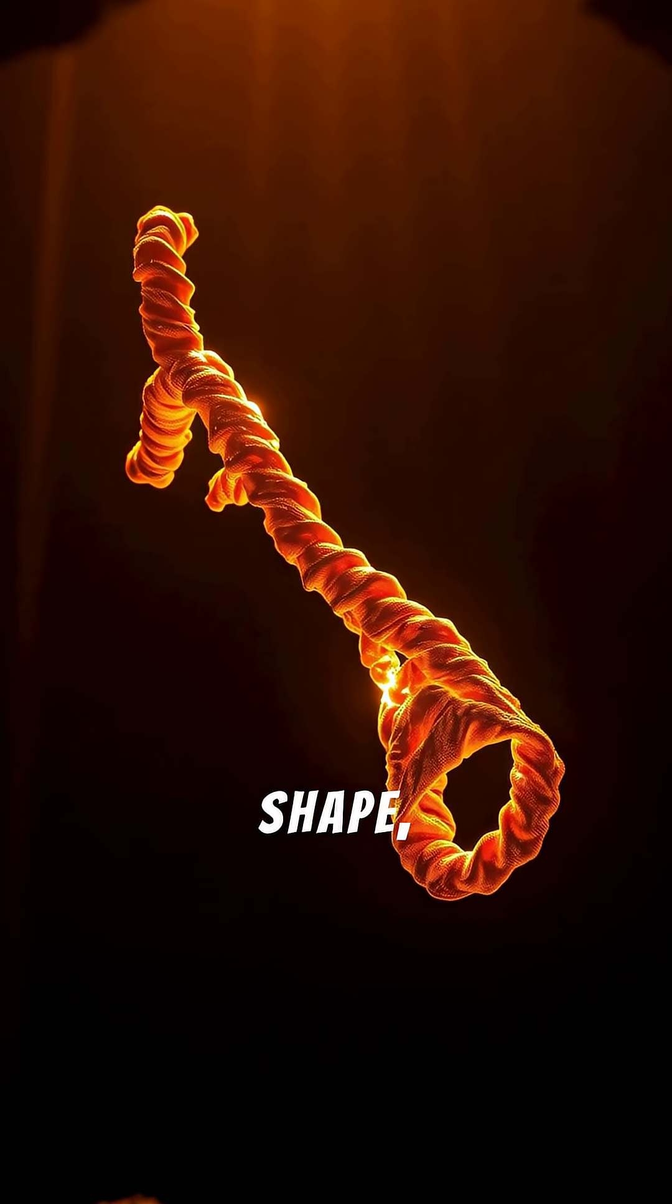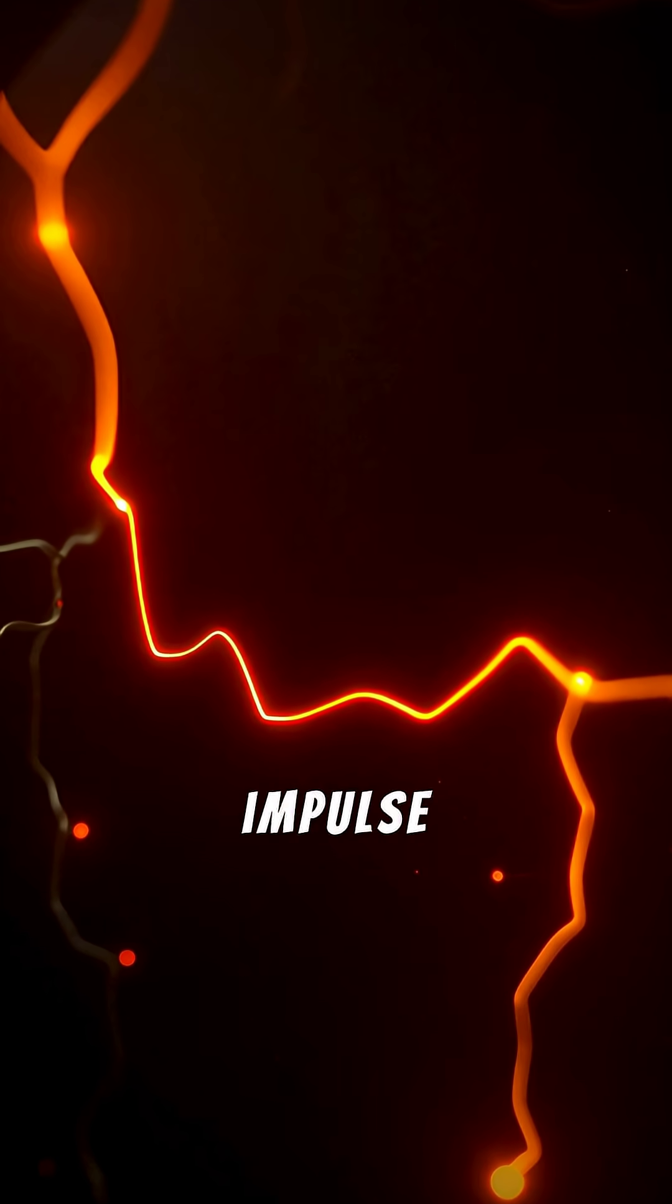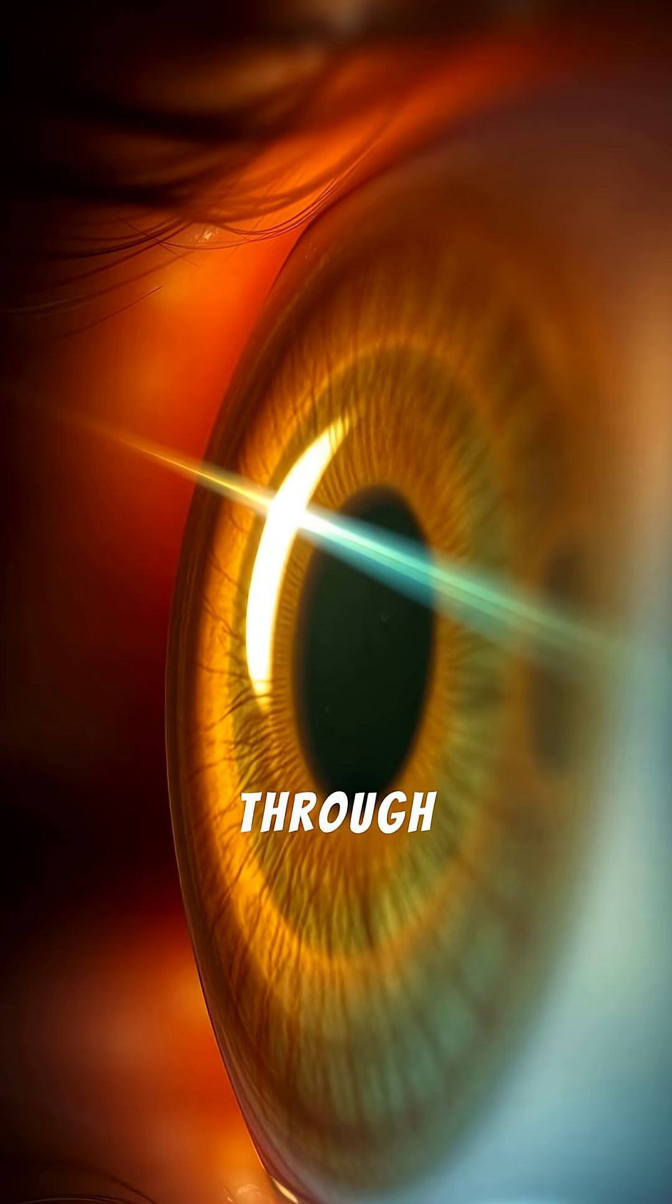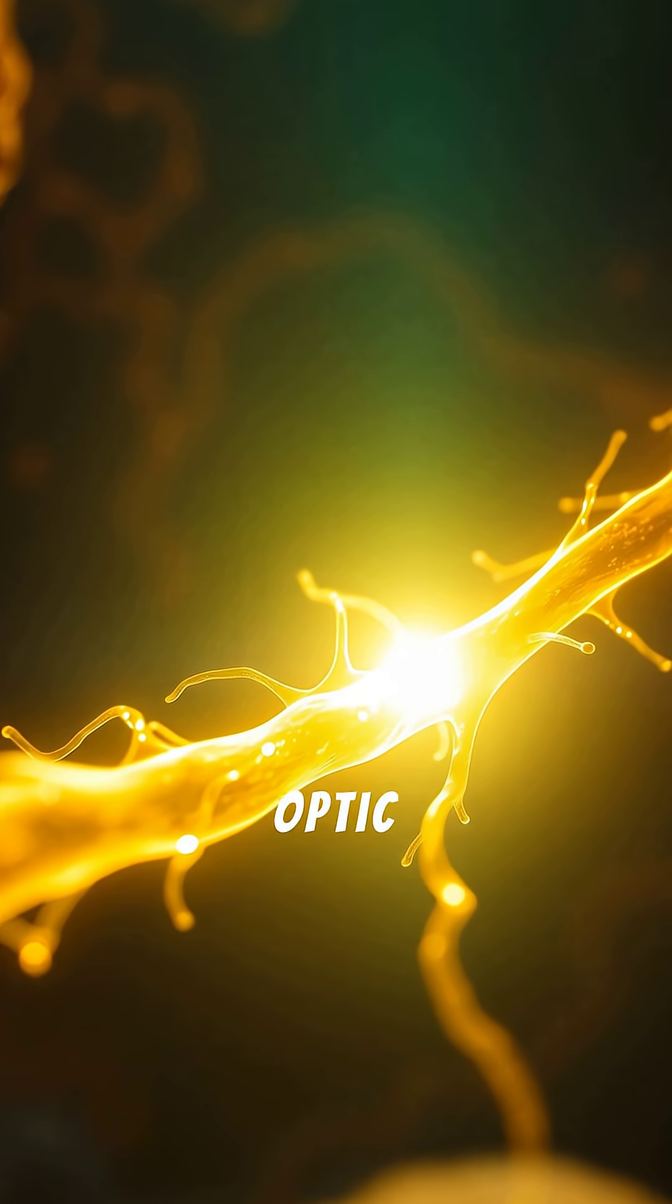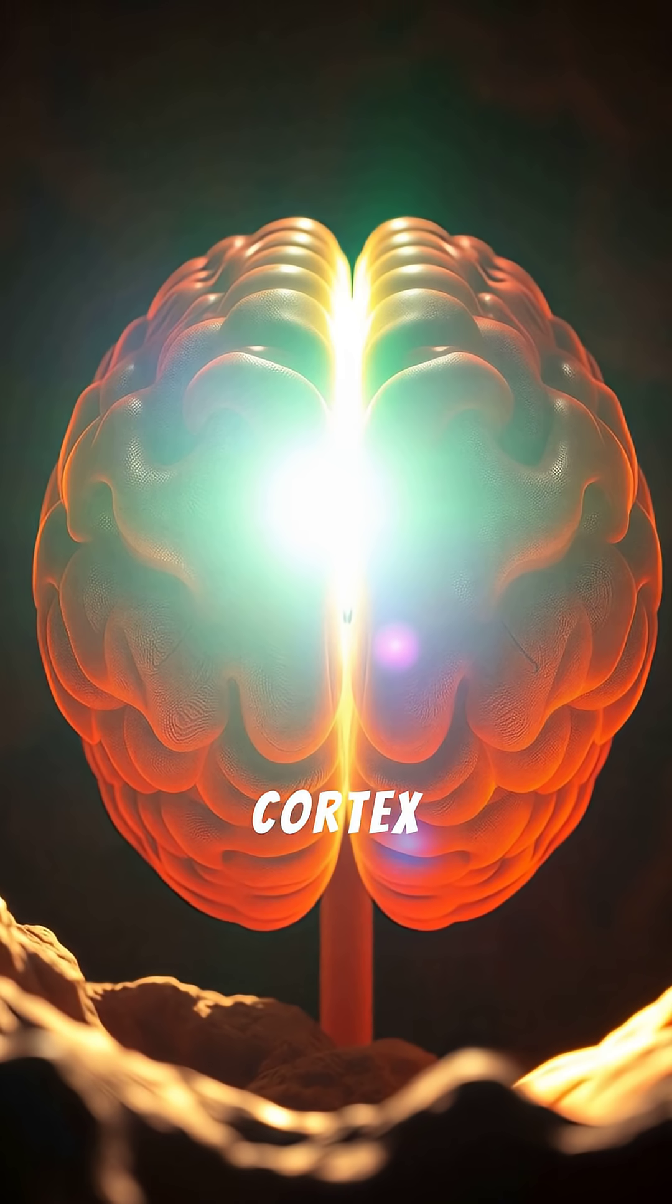Pigment molecules get excited. A protein changes shape and that triggers a tiny electrical impulse. That impulse travels along the nerve, through the retina, through the optic nerve, through the thalamus and reaches the visual cortex of the brain.